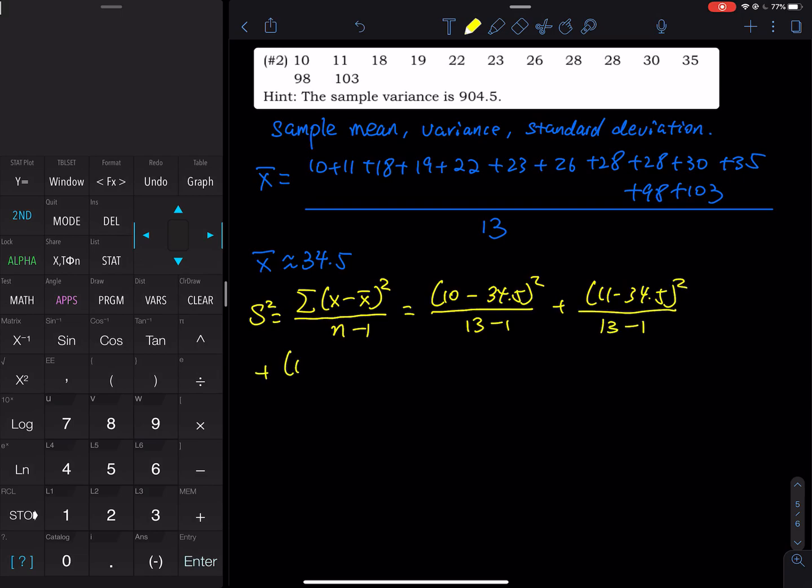And then (18 - 34.5)² divided by 13 minus 1, and then (19 - 34.5)² divided by 13 minus 1, and then (22 - 34.5)² divided by 13 minus 1.